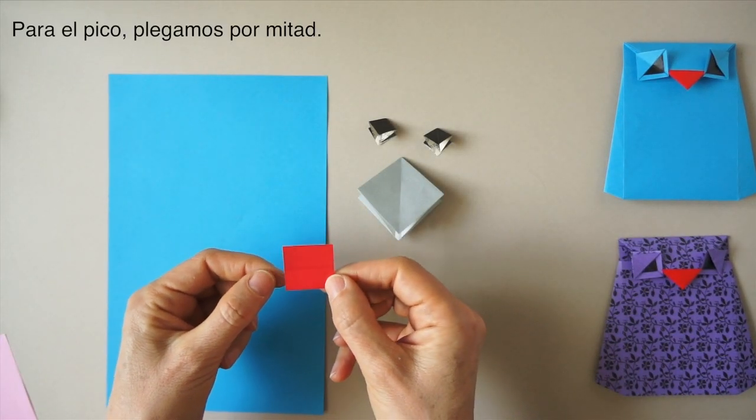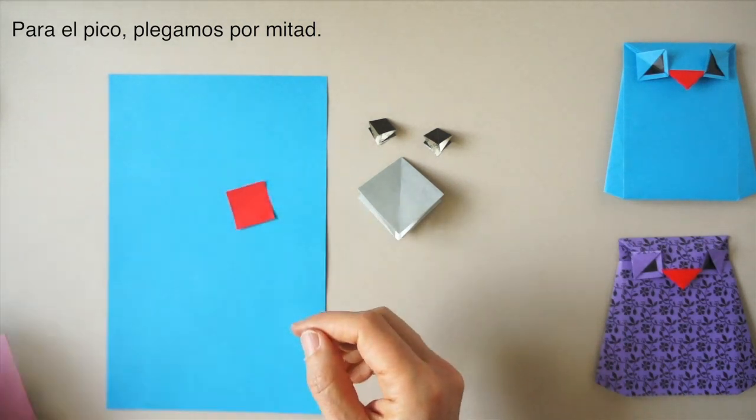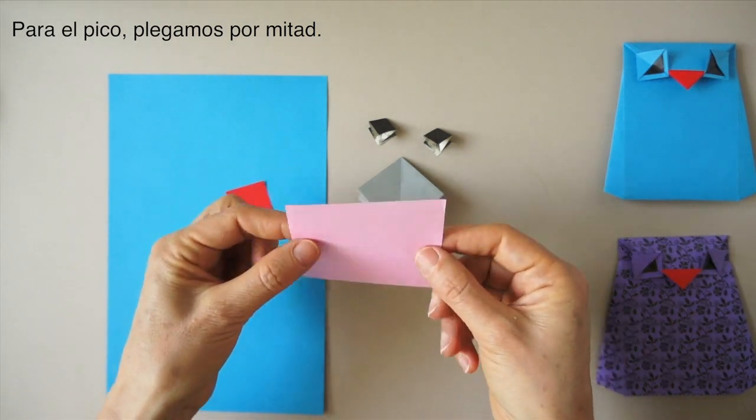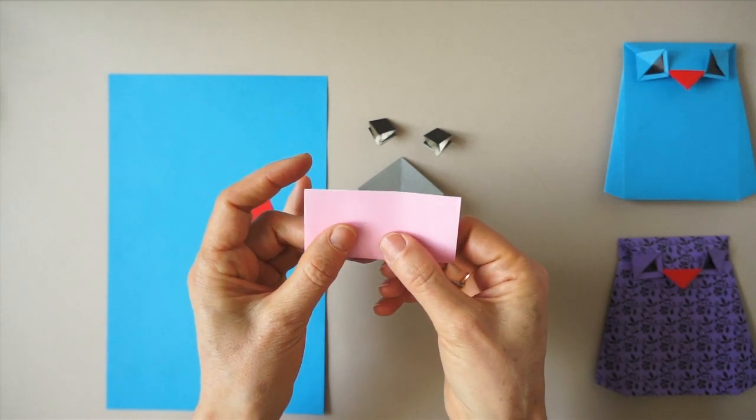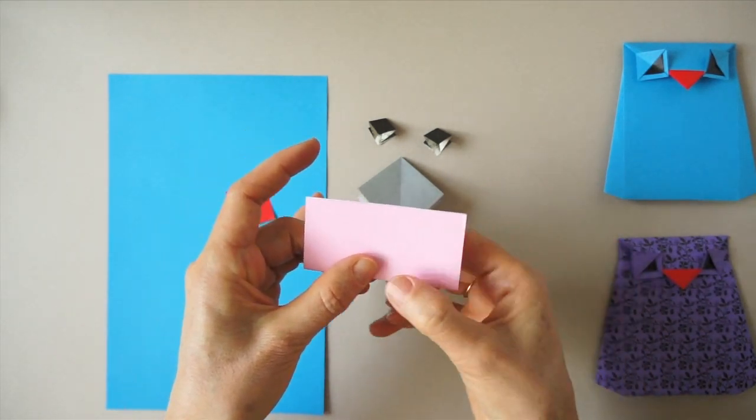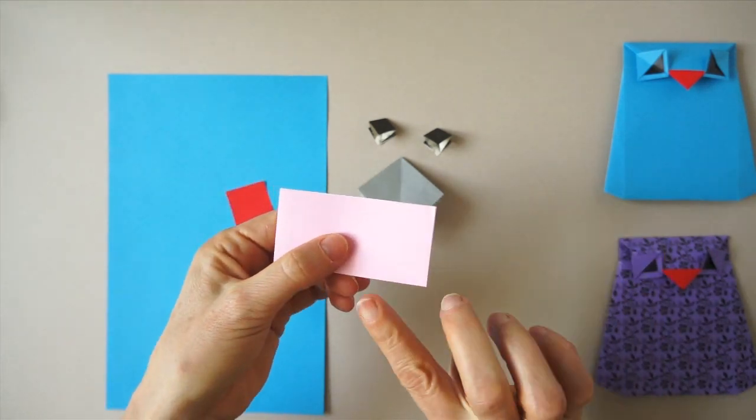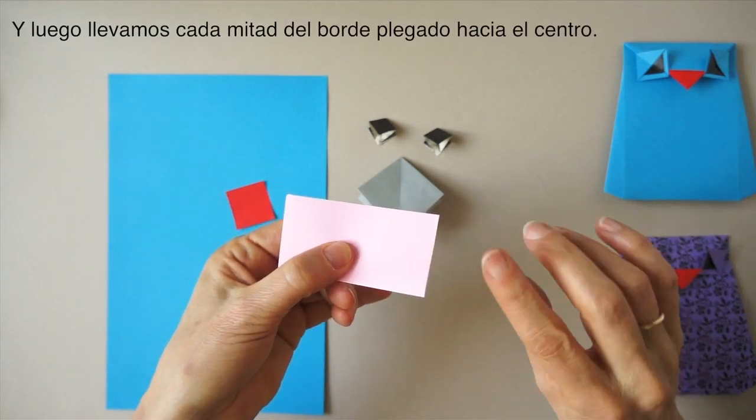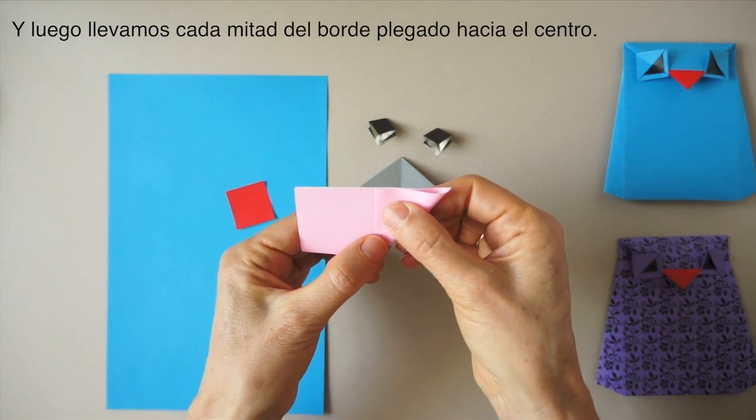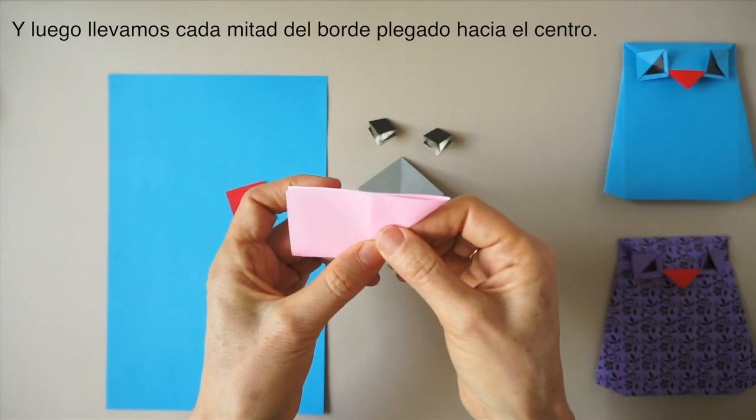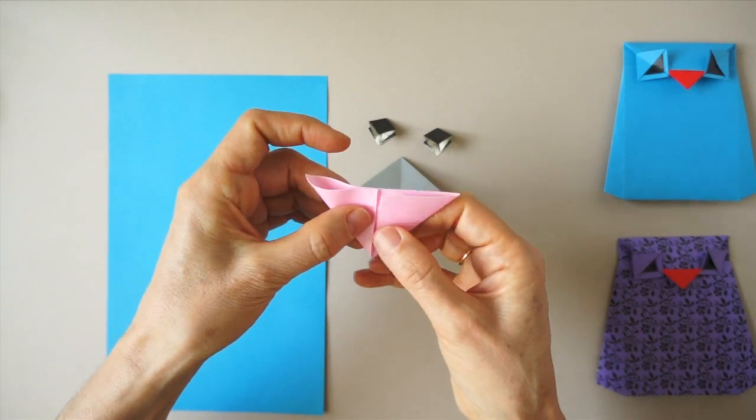For the beak, it's going to be very easy. We are going to fold it in half and bring each side of the folded edge to meet with each other.